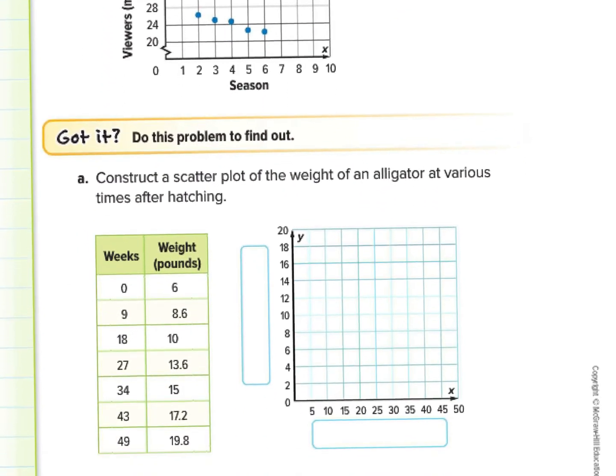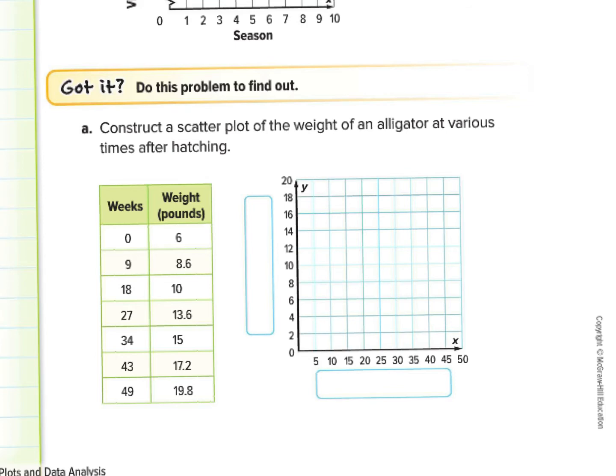And we do the same for this example here. For this example, we have a scatter plot of the weight of an alligator at various times after hatching. Here is your number of weeks. And notice that they're in no fixed increment. It starts by increasing by 9, then again by 9, then again by 9. But then not quite by 9. Here we have increased by 7, then again by 9, then by 6. So it's not really following a certain pattern or a rule.